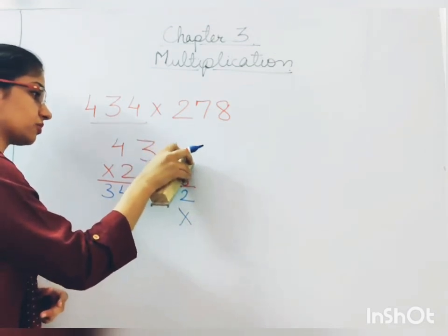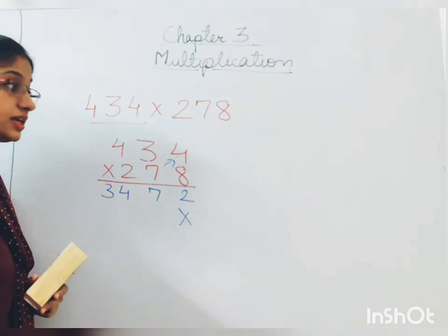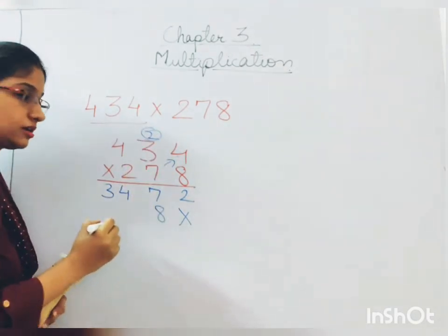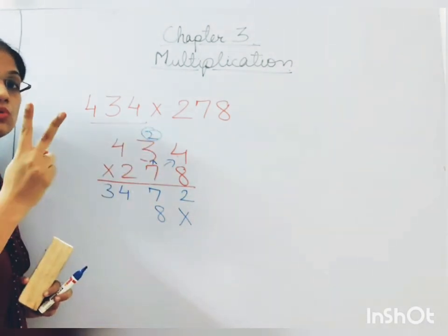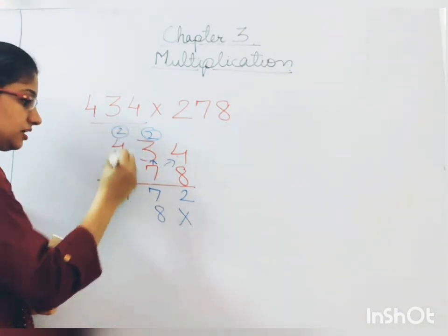7 multiplied by 4. 7 multiplied by 4 will be 28. So 2 above and 8 down. 7 multiplied by 3 will be 21. Plus 2. 22, 23. So 2 above and 3 down.